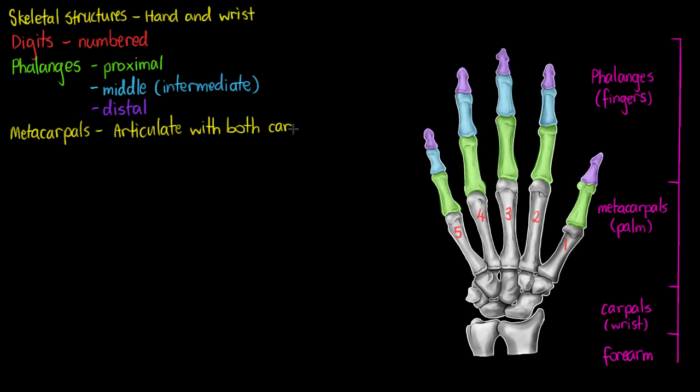They articulate with both the carpals of the wrist and the phalanges. So they have two articular surfaces and two specific joint surfaces. I've just highlighted the metacarpals here in yellow and colored in the segment where we form our articular surfaces: one with the phalanges and the second with our carpals.